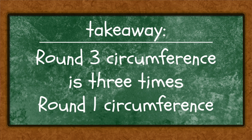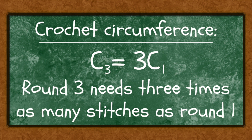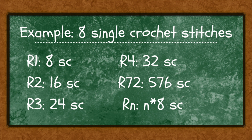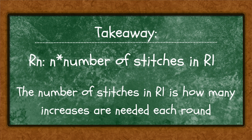That's the big math takeaway. However many stitches we worked in round one, we need to work three times that many in round three, four times that many in round four, and so on. In our example we started with eight stitches, so we add eight more stitches every round: round one has 8, round two has 16, then 24, then 32. The formula is: take the round number you're on and multiply it by the number of stitches from round one to get how many stitches to work for that round.